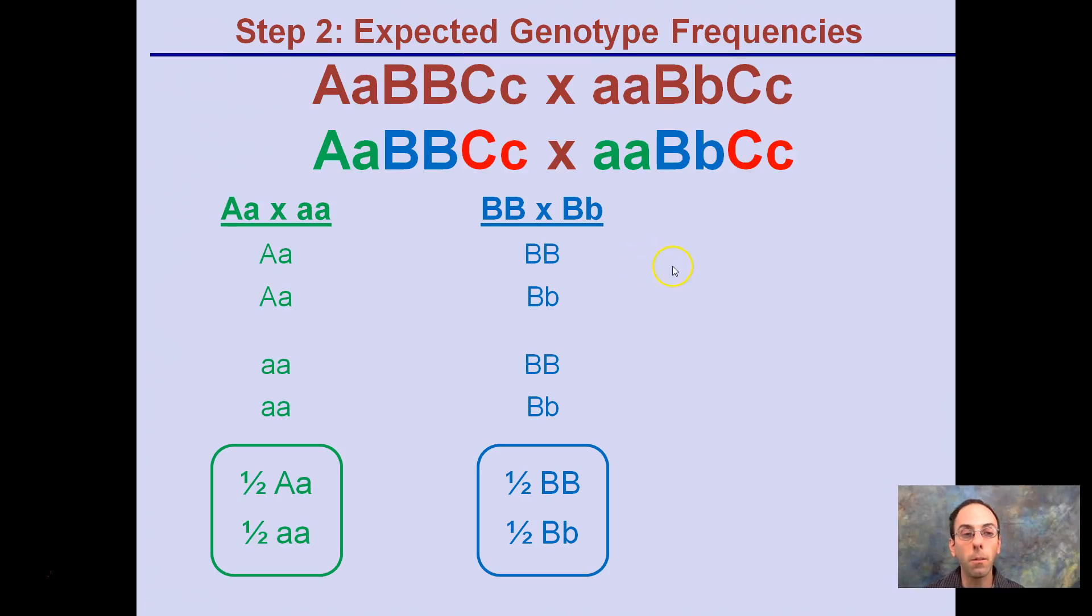Let's do the same thing for the B's. So if we're looking at the B's now, we still have our A's over here. Now we've got our homozygous dominant with our heterozygous. We cross these together in a monohybrid cross way, we would have half being homozygous dominant, and half being heterozygous.